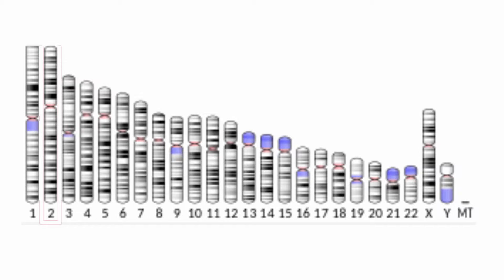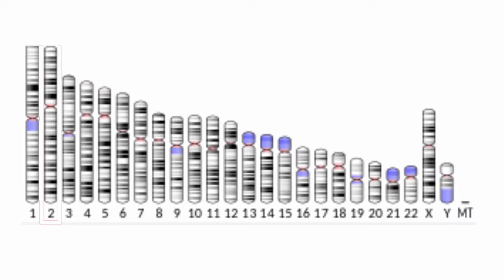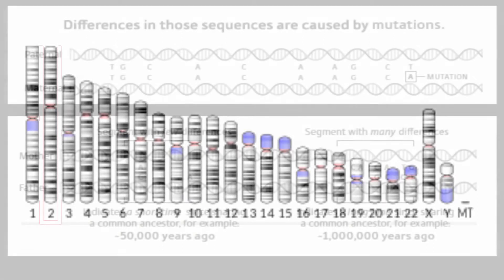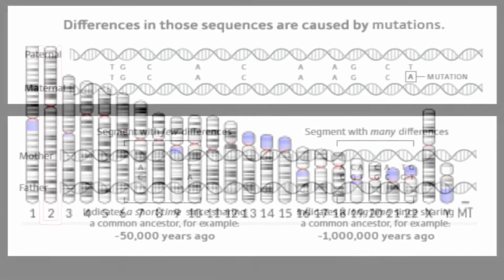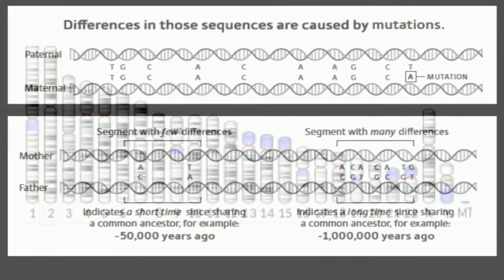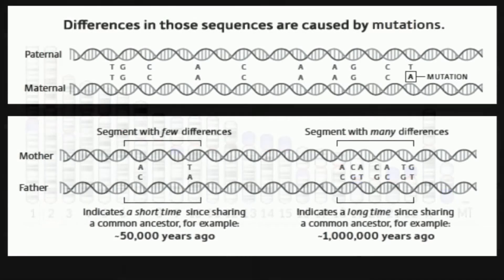Overwhelmingly, 99.9% of the sequences that you have from your father and mother are identical. But given the size of the genome, a tenth of a percent gives millions of differences.